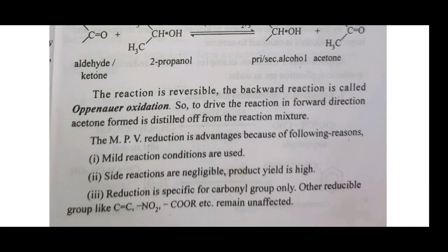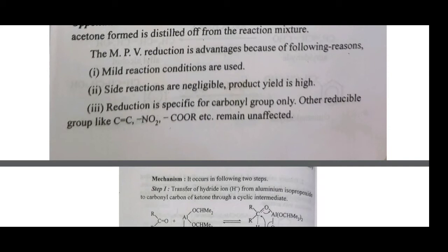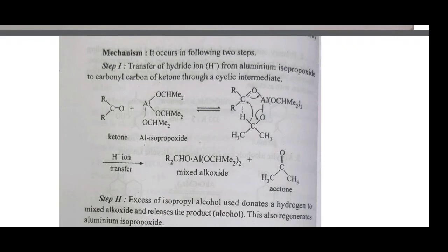Now we study the mechanism of this reaction. The mechanism involves transfer of a hydride ion — that is H minus ion — from aluminum isopropoxide to the carbonyl carbon of the ketone through a cyclic intermediate. The reagent is aluminum isopropoxide, with aluminum having valence 3 and therefore 3 –OCHMe₂ groups. The ketone then reacts with aluminum isopropoxide for formation of a cyclic intermediate.